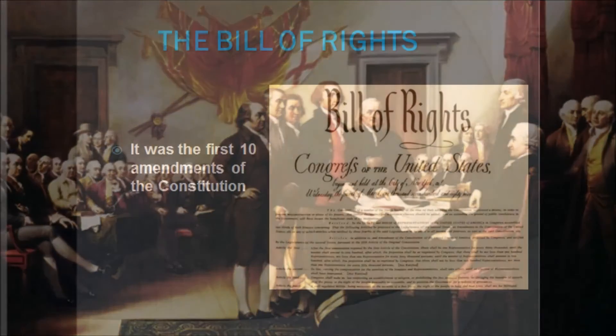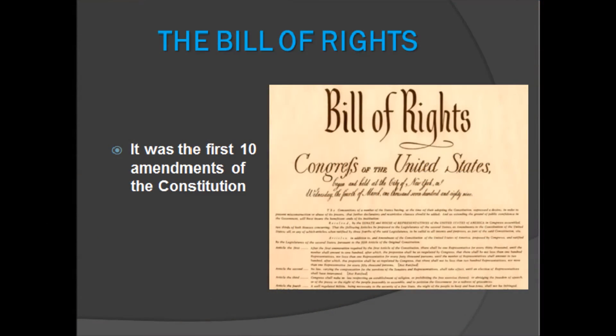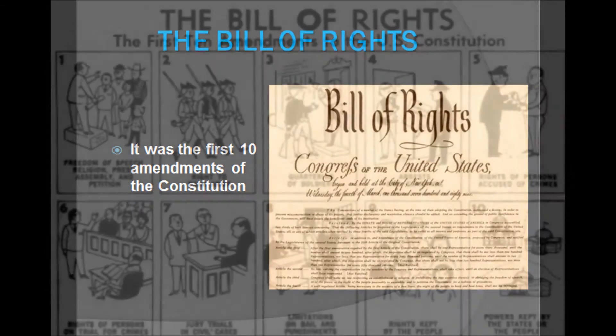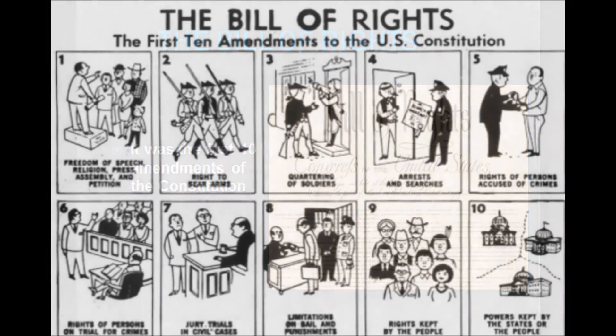The Bill of Rights listed the first ten amendments of the Constitution, including the right to bear arms and freedom of speech.